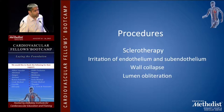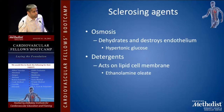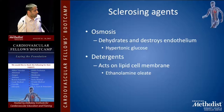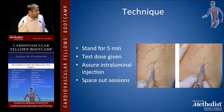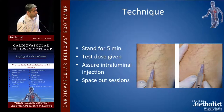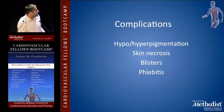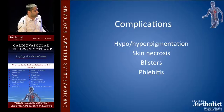Sclerotherapy irritates the endothelium and subendothelium, causes the wall to collapse, and obliterates the lumen. Agents include osmotic agents, which dehydrate and destroy the endothelium — hypertonic glucose is one agent — and detergents, which act on the lipid cell membrane, such as ethanolamine oleate. The technique: have the patient stand for about five minutes, give a test dose, ensure intraluminal injection by aspirating before you inject. Complications include hypo- or hyperpigmentation, skin necrosis, blisters, and phlebitis.